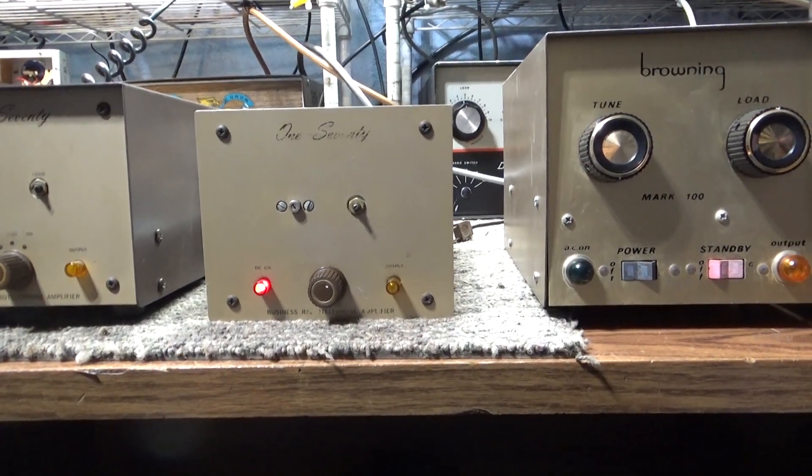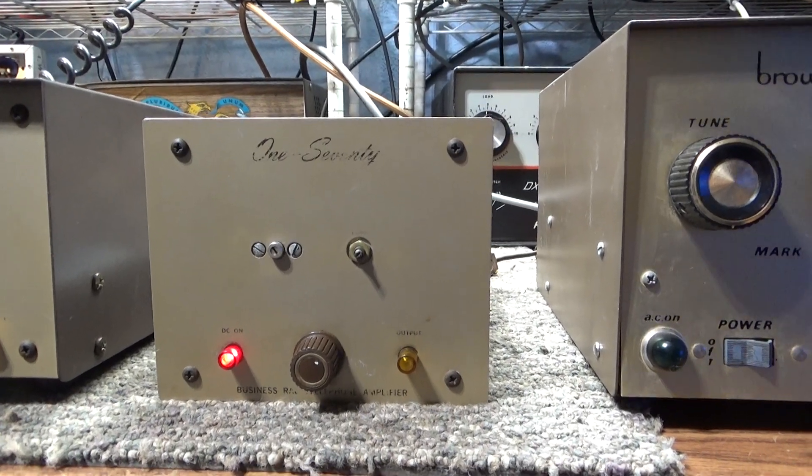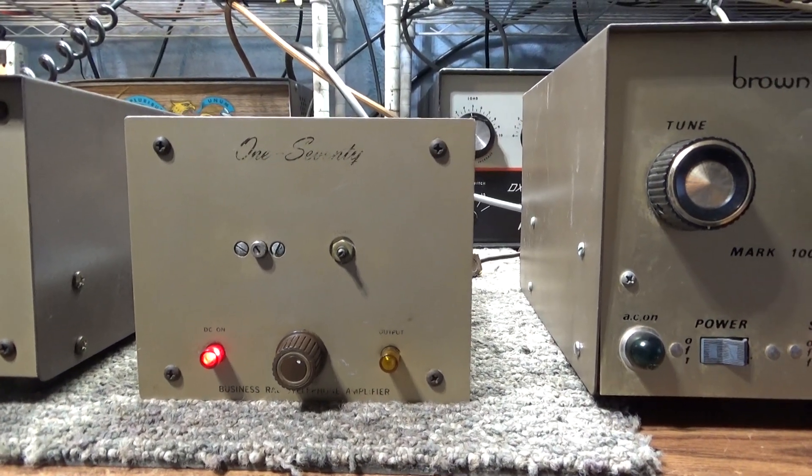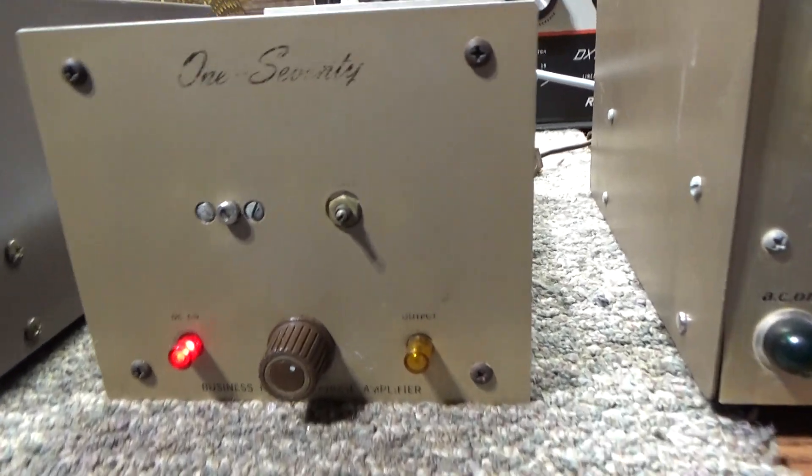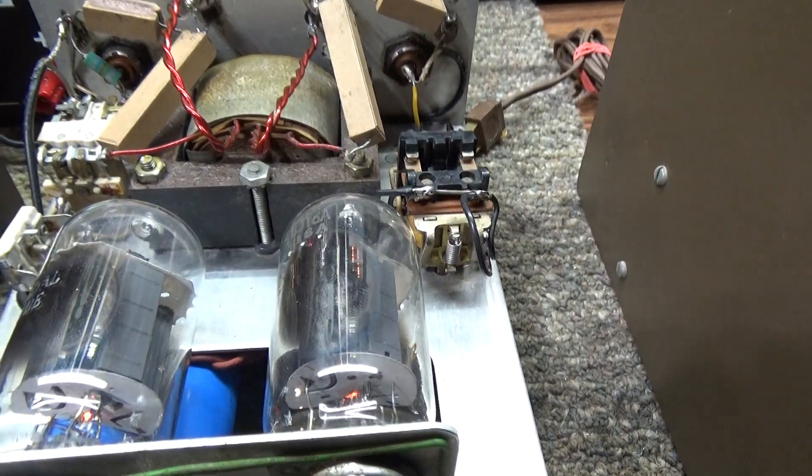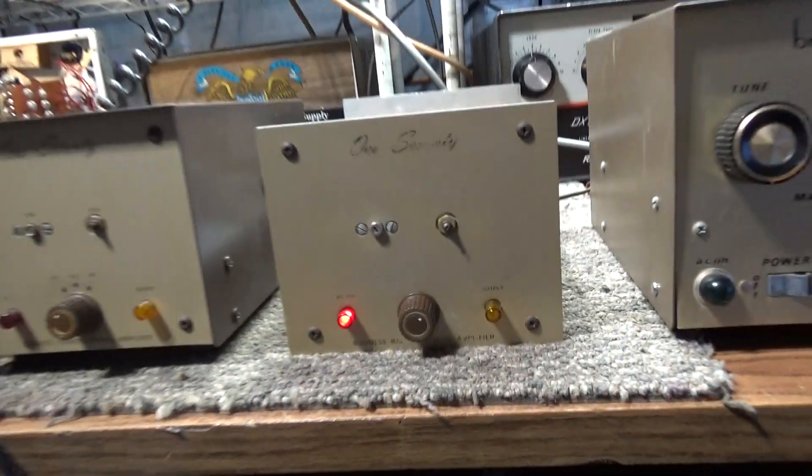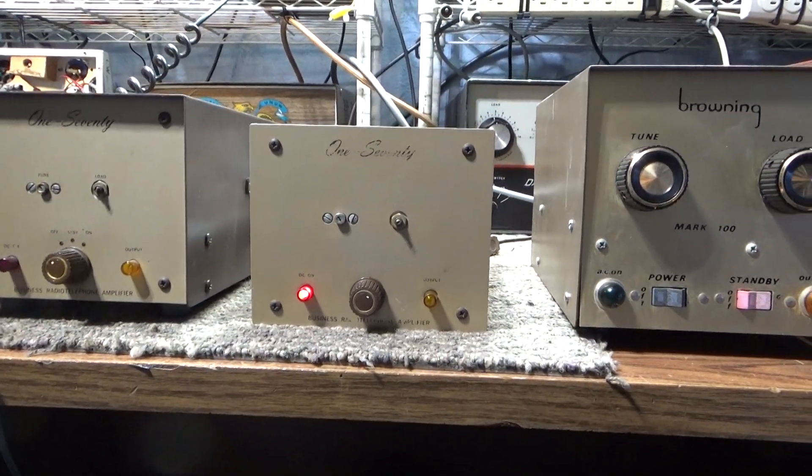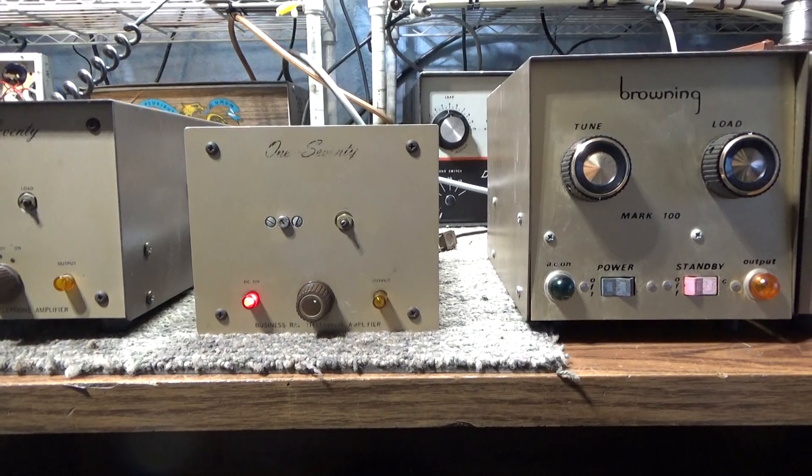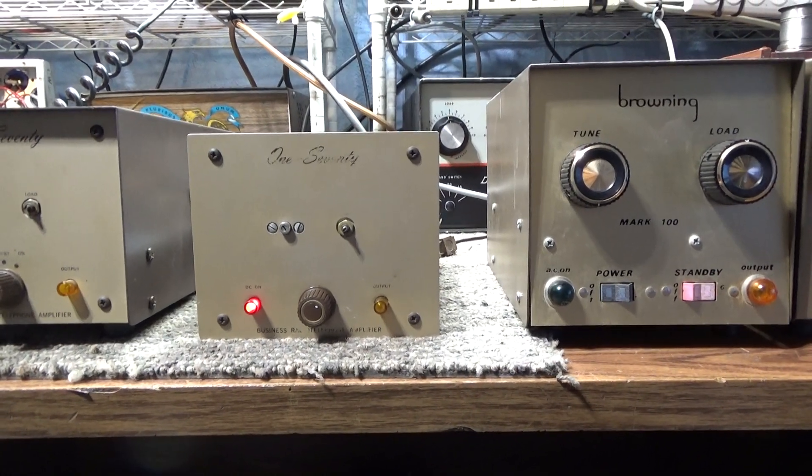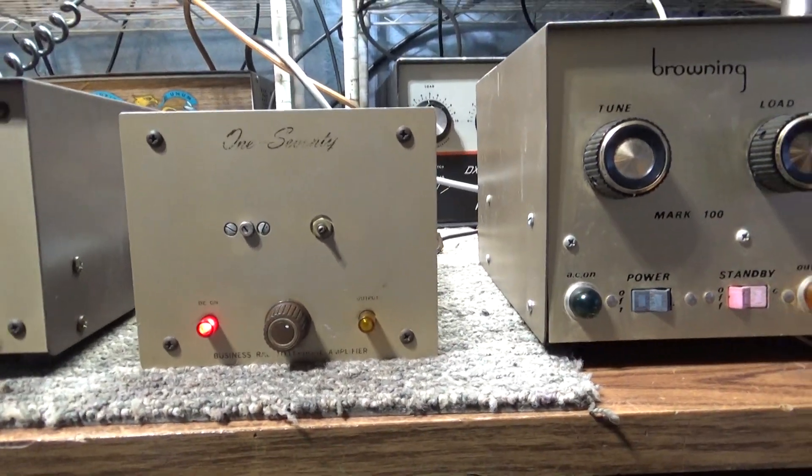Since I picked up this Browning 170, which is the mobile version of the 180, it's a 50-100 watt amplifier using two small 6JG6 family tubes. It's just a little two-tube grounded grid amplifier made by Browning. I believe they started making these back in 1970. I just picked up this little DC 170 version and recapped it.